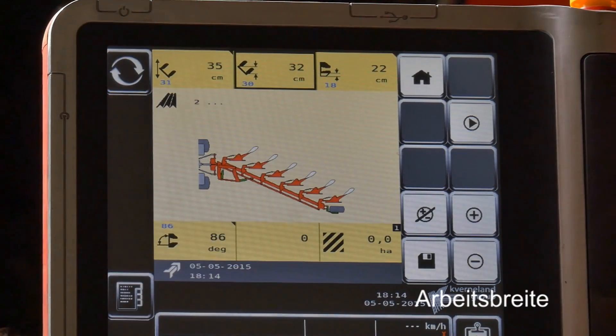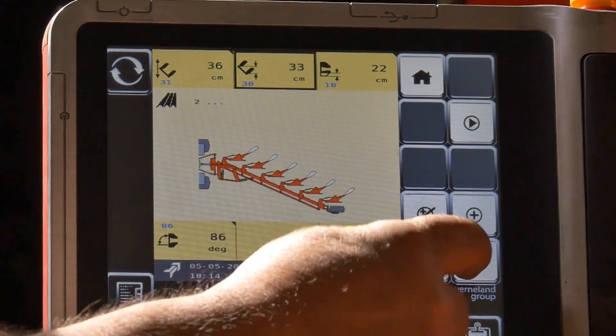Next we have the vario and it's the same again, wider or smaller.